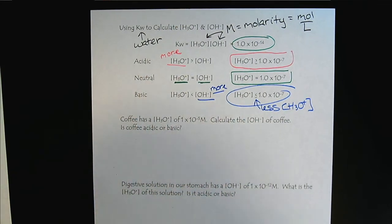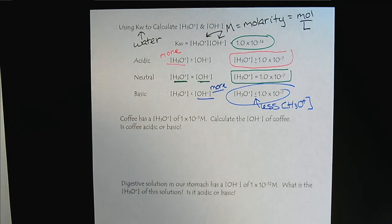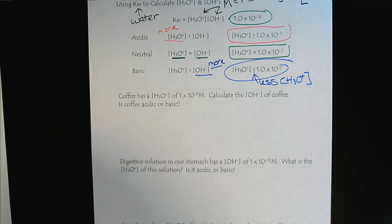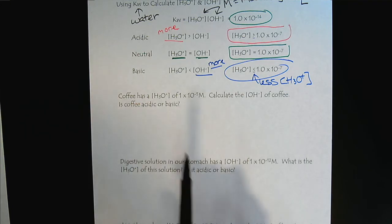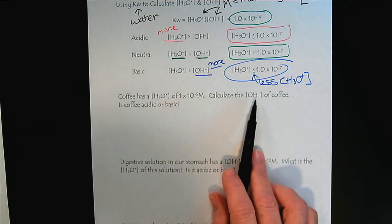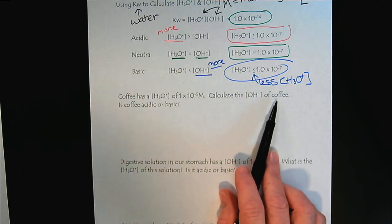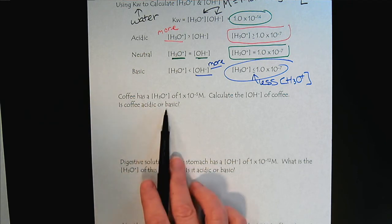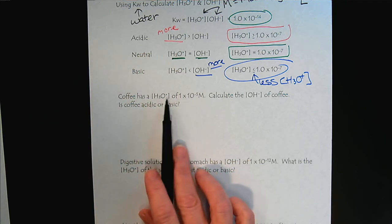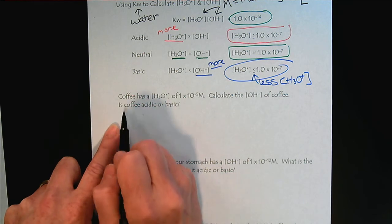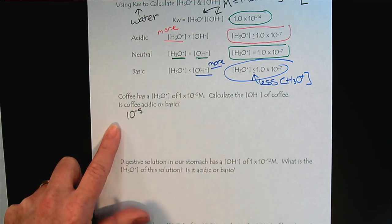So let's practice using the KW expression with some different solutions. So for example, coffee has a hydronium concentration of 1 times 10 to the minus 5 molar. Let's calculate the hydroxide concentration. And let's determine whether or not the coffee is acidic or basic. Well, since this question has already given us the hydronium concentration, we can already answer acidic or basic. So what's the relationship between 10 to the minus 5 and 10 to the minus 7?